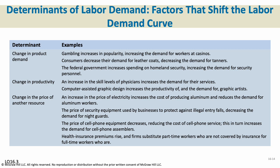Changes in the price of resources also shift labor demand: if electricity gets more expensive, it becomes more costly to make aluminum, meaning fewer aluminum workers; if security equipment becomes cheaper, it becomes more lucrative for businesses to buy that equipment and hire security guards. If cell phones get cheaper, it increases demand for people building them — tech products start expensive and get cheaper over time, driving demand up. And if health insurance premiums rise, firms may substitute part-time workers not covered by insurance for full-time workers who are, sadly something that happens all too often.